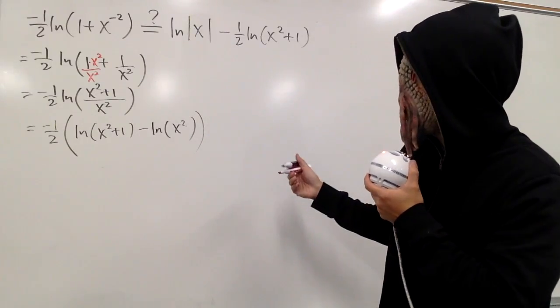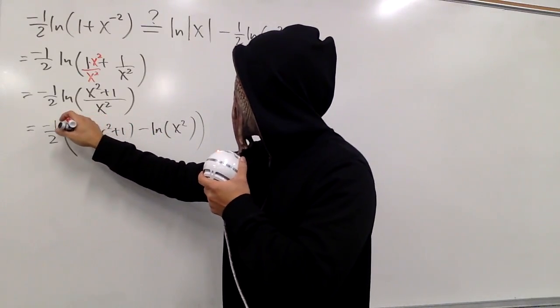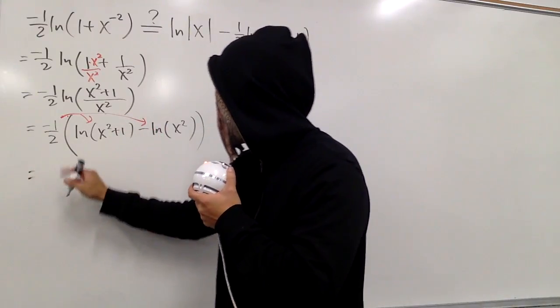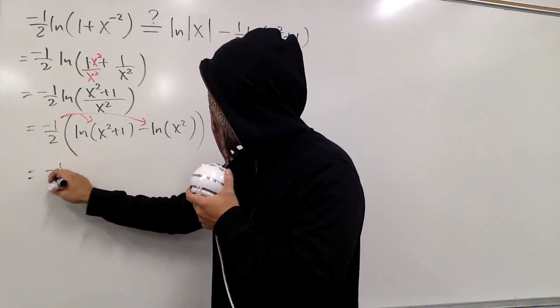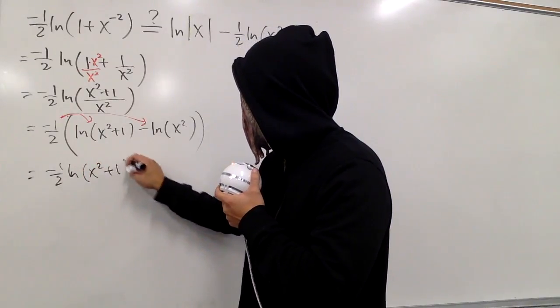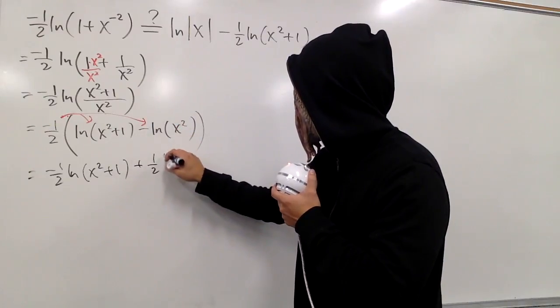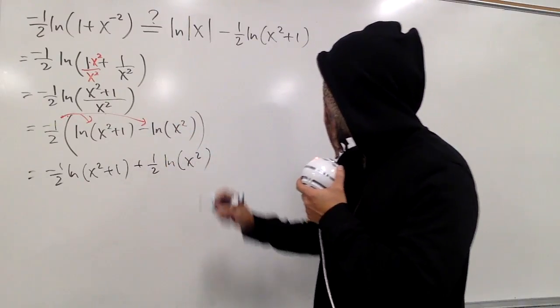And you see it's pretty much the same already. Well, we just have to take this, distribute, and then you have this times that is negative 1 half ln x squared plus 1. Negative times negative is positive 1 half natural log of x squared, like that.